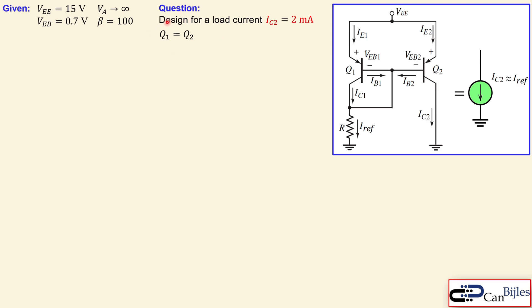Again, they are matched. So they have the exact same physical area, emitter area. They have the exact same beta. They have the exact same early voltage. So all the parameters are exact same in this fashion.